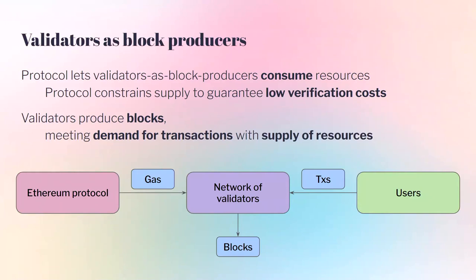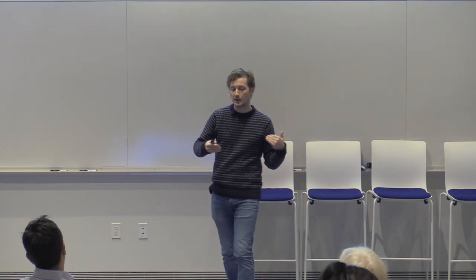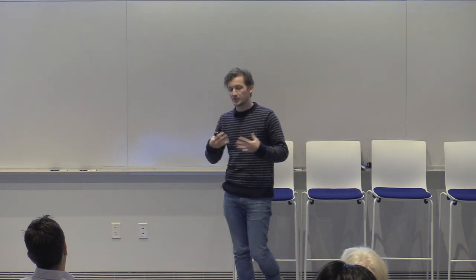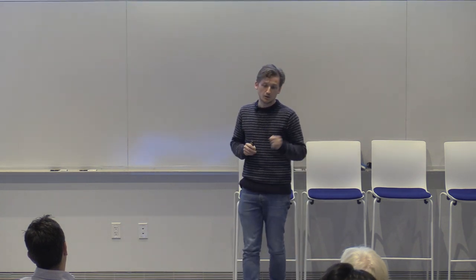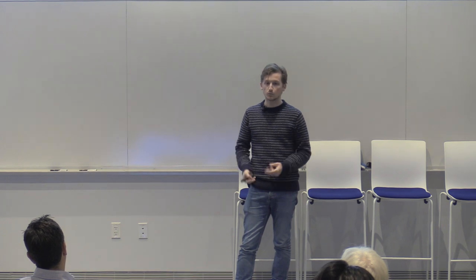With this idea of gas and supplying resources to the network, you can think of validators as block producers or resource providers. The protocol lets block producers consume these resources and embodies constraints in its specification to prevent overuse. Validators are kind of market makers between the supply given to them by the protocol as gas, and the transactions they receive from users — existing as the meeting place between resource supply and transaction demand.